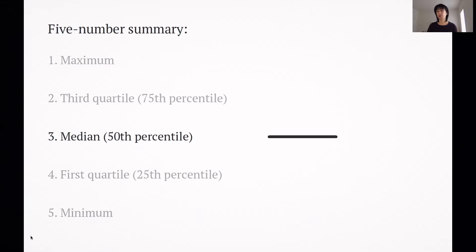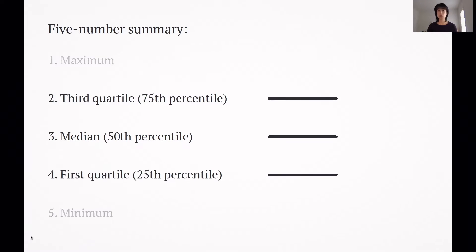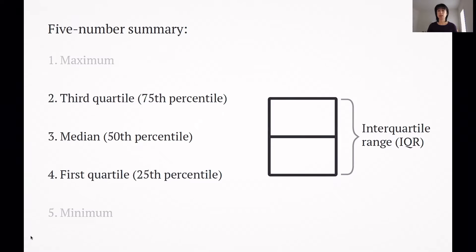To create a box plot, we first draw a line at the median — this is the value that half of your data points are less than and half are greater than. We then draw two more lines, one at the first quartile and one at the third quartile.